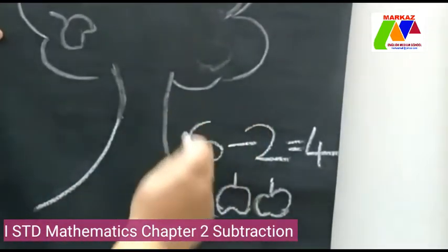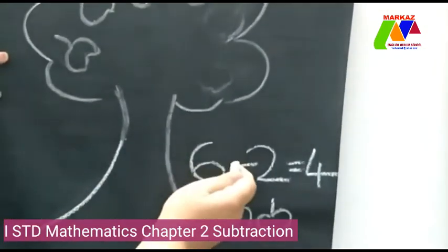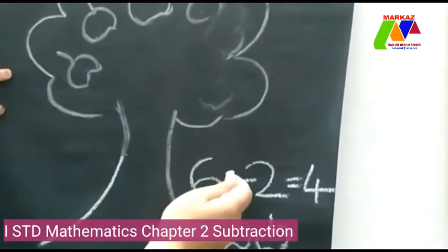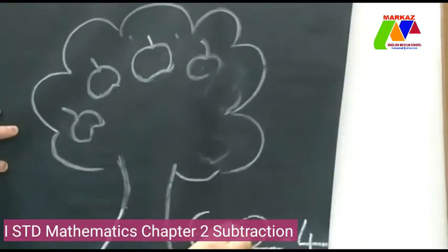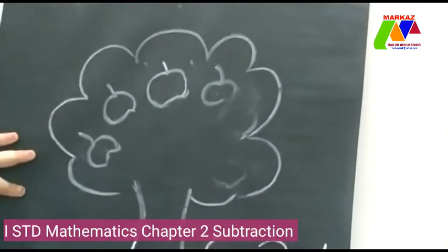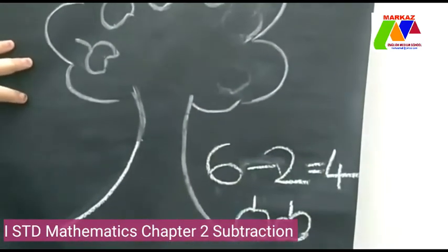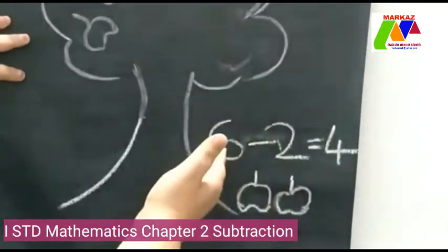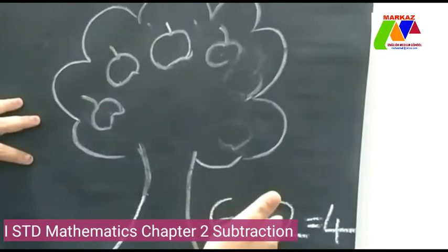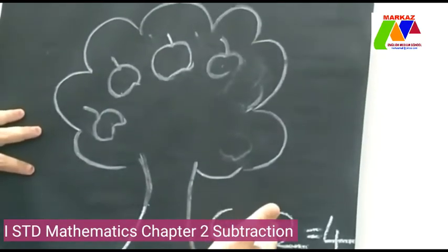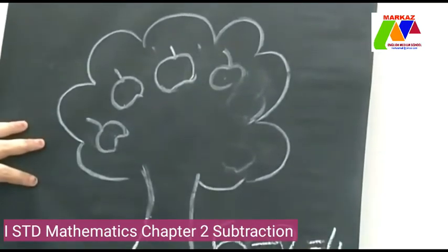Here we can see 6 apples. How many apples fell down? 2 apples. Fell down means minus. This is the symbol of subtraction. 6 minus 2 — the answer is 4. So 6 minus 2 is equal to 4. All of you clear?